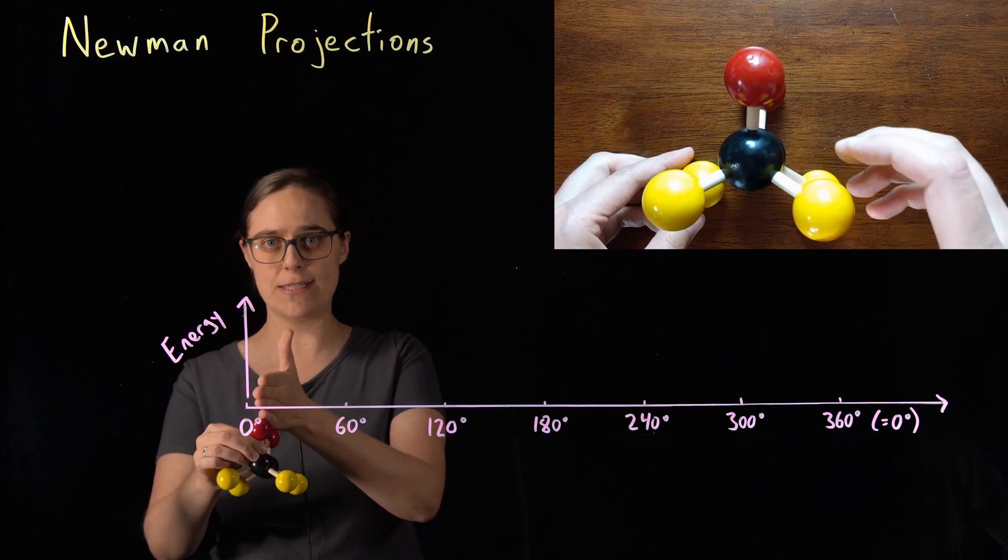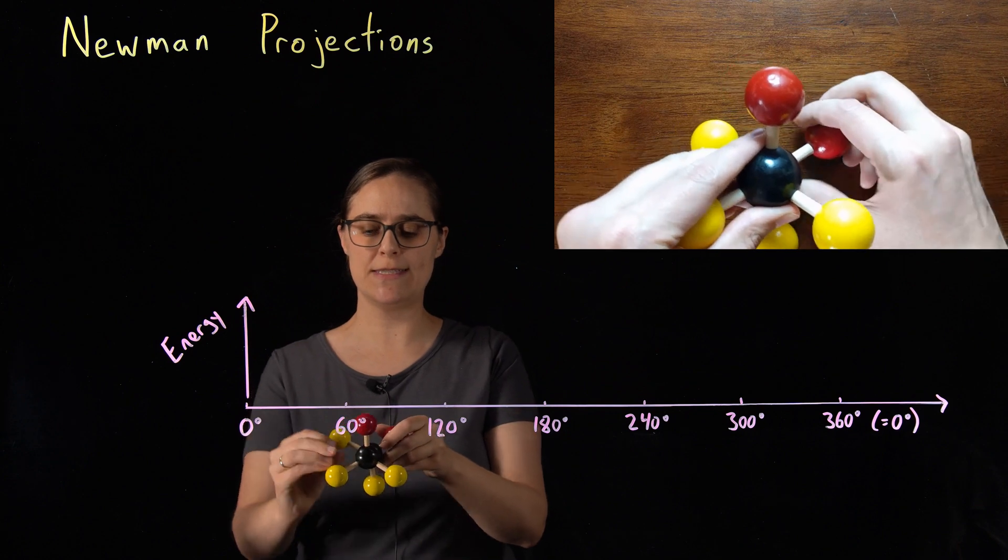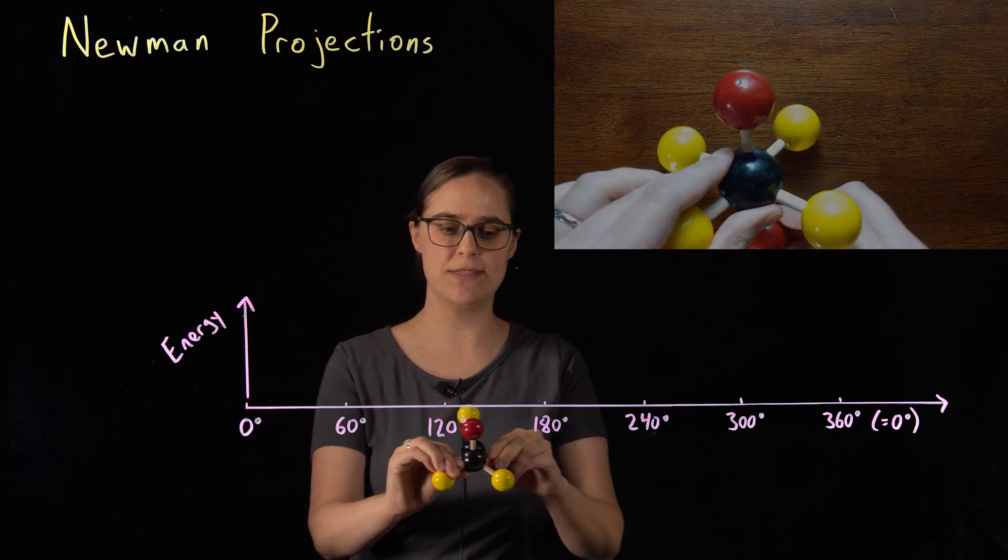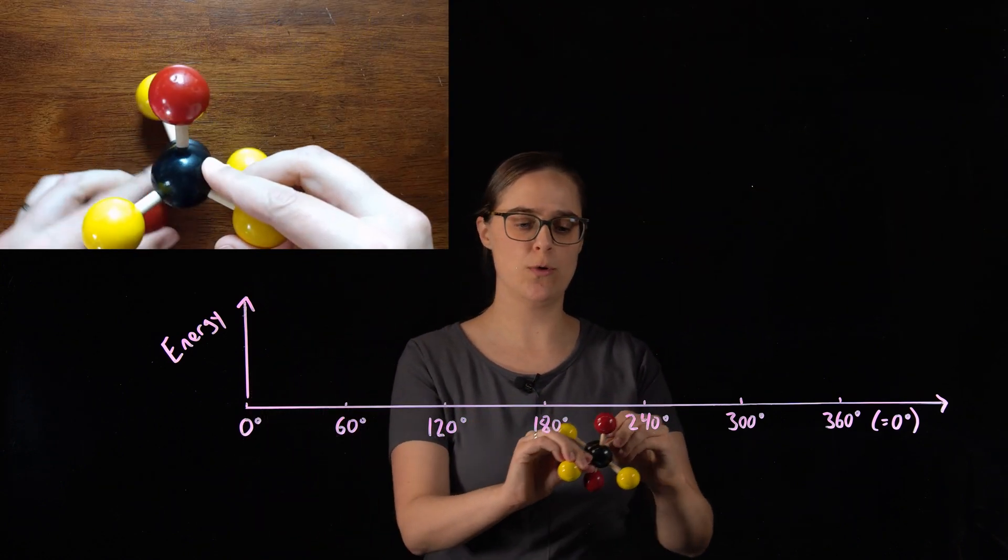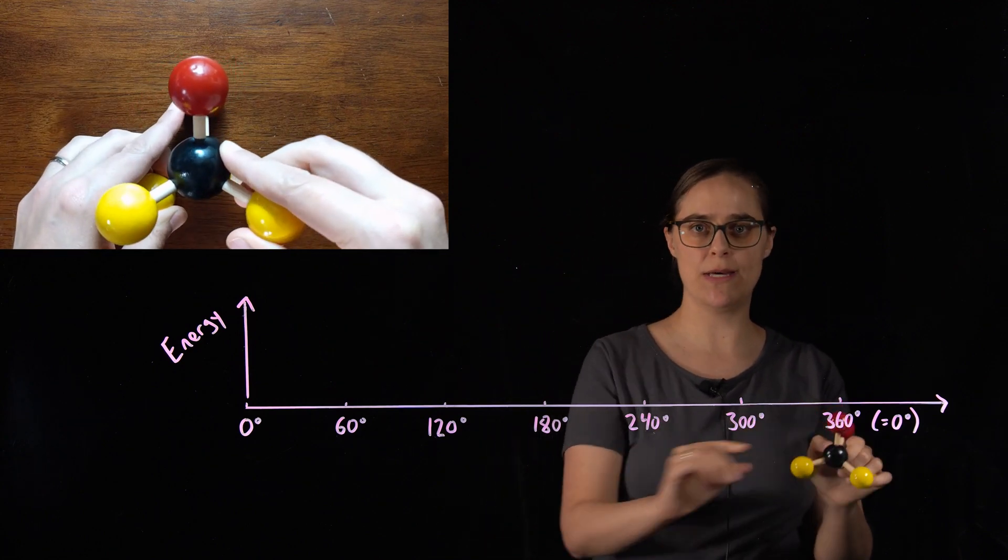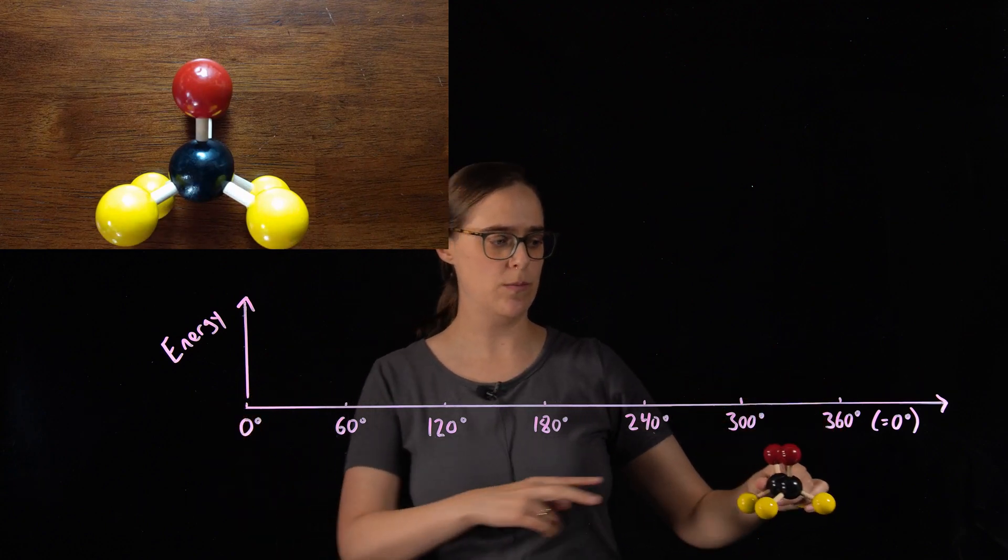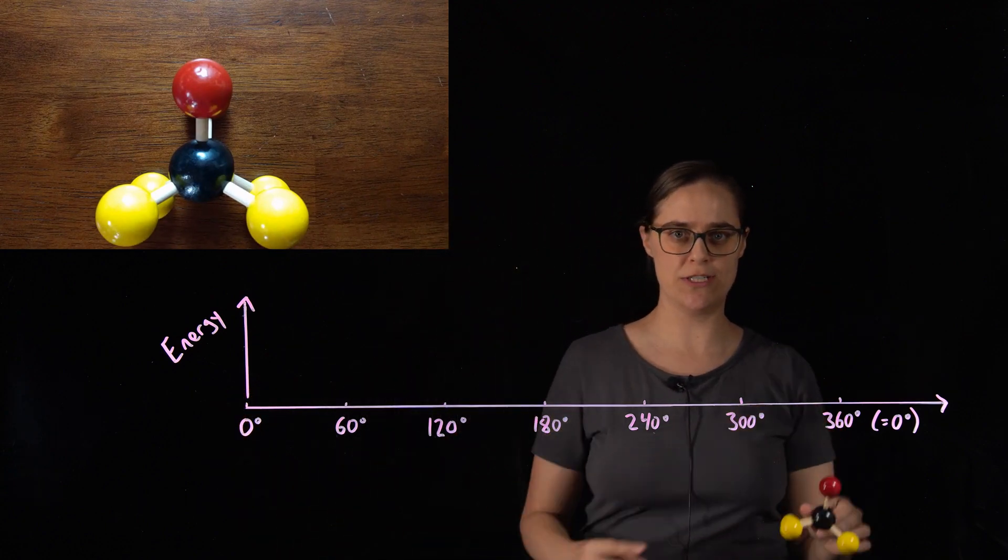As in zero degrees, two red hydrogens are eclipsed. I'm going to be drawing a series of Newman projections, each one rotated 60 degrees from the previous until we get back to the beginning with zero and 360 degree rotations, both being the same, two red hydrogens aligned.